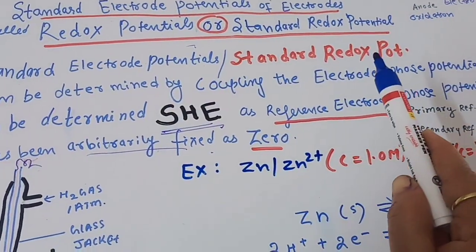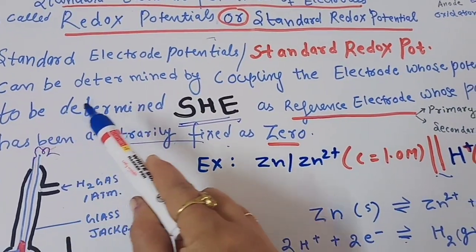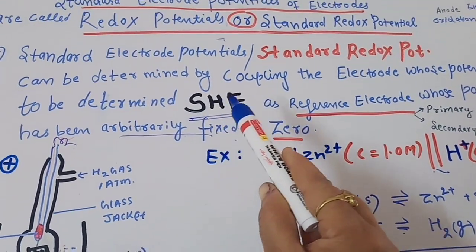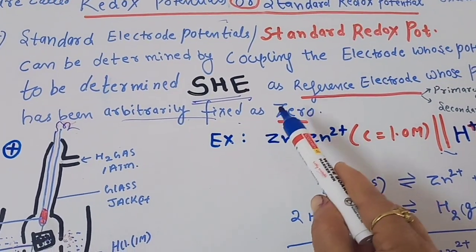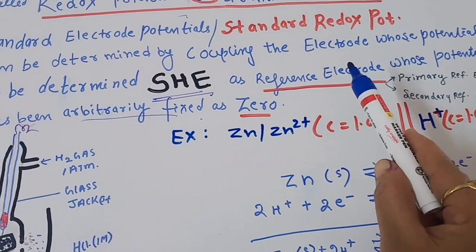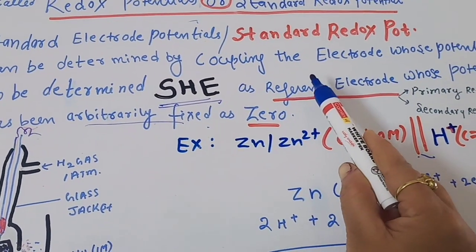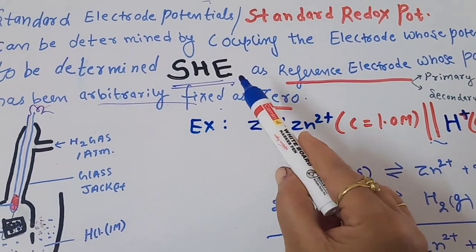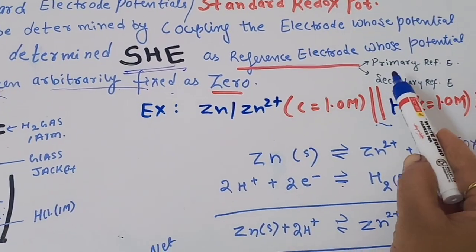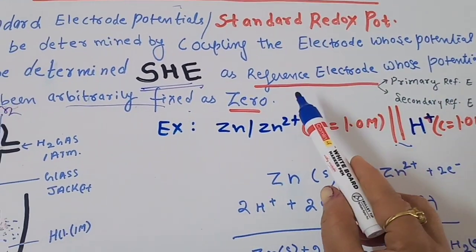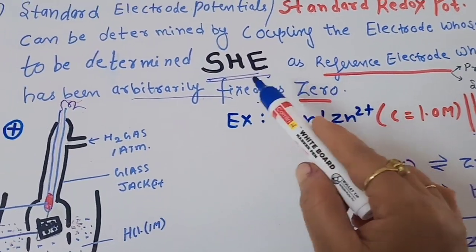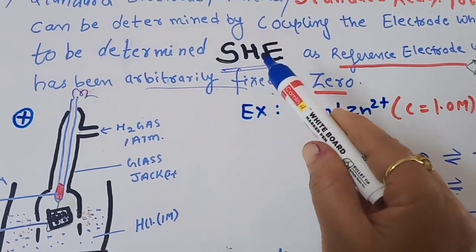The standard electrode potential or standard redox potential can be determined by coupling the electrode whose potential has to be determined with the standard hydrogen electrode. There are different types of electrodes — primary reference electrodes and secondary reference electrodes. If we want to determine the electrode potential of any electrode, we couple it with a reference electrode. Here we are giving the example of coupling with the standard hydrogen electrode.